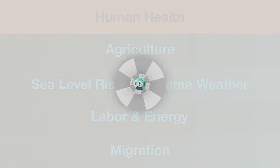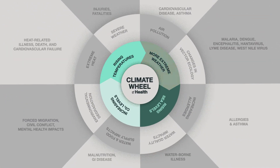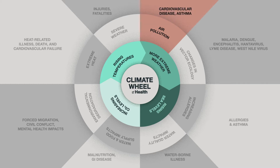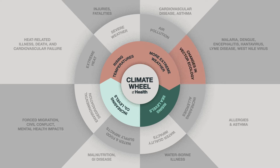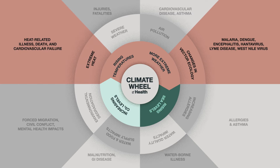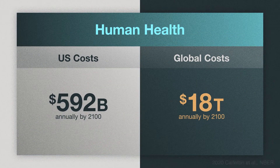Human health. Heat waves, extreme weather, air pollution, and sea level rise all come with their own set of health consequences. Long-term exposure to air pollution increases cases of childhood asthma and cardiovascular disease in adults. Rising temperatures and extreme weather increase the prevalence of vector-borne diseases like malaria and dengue, as well as deaths related to heat stress. Globally, the monetized risk of mortality due to climate change is projected to be near $18 trillion in 2100.